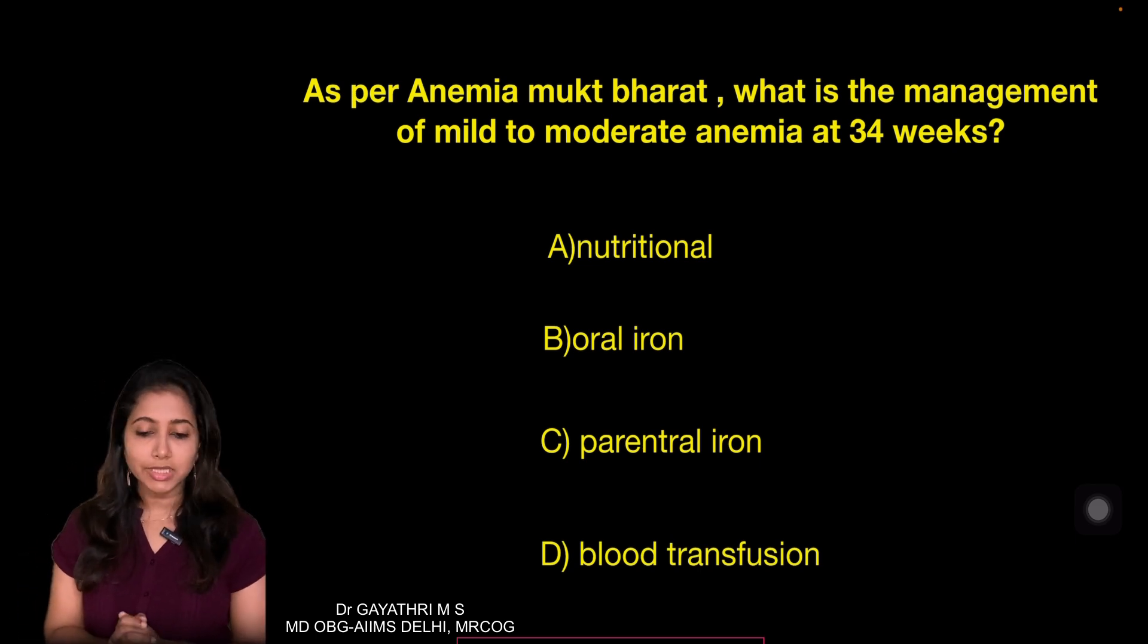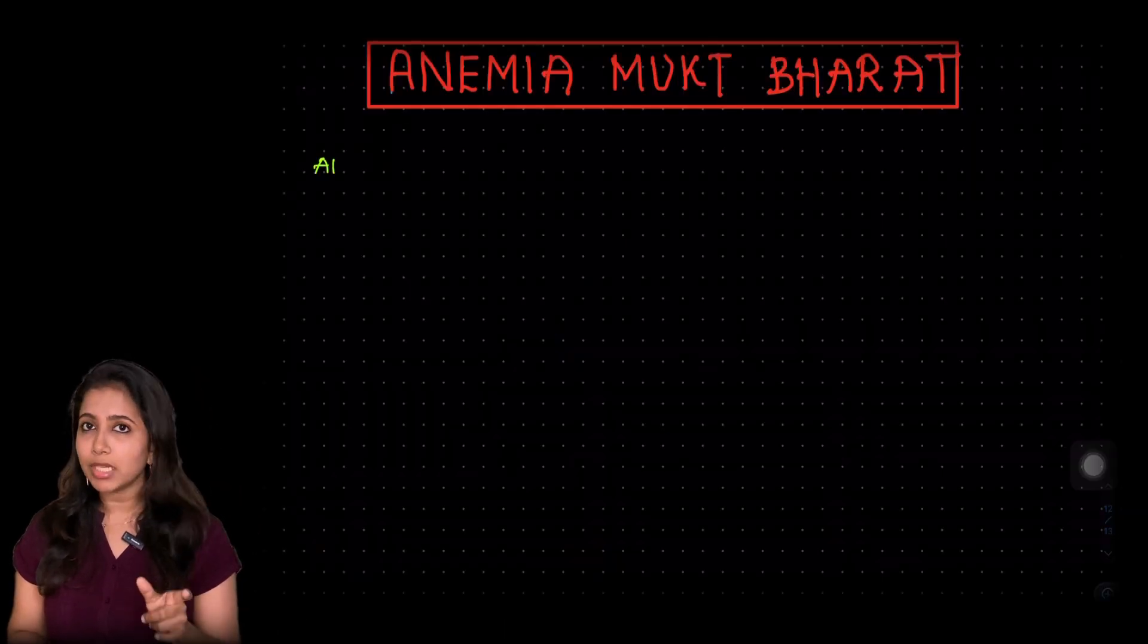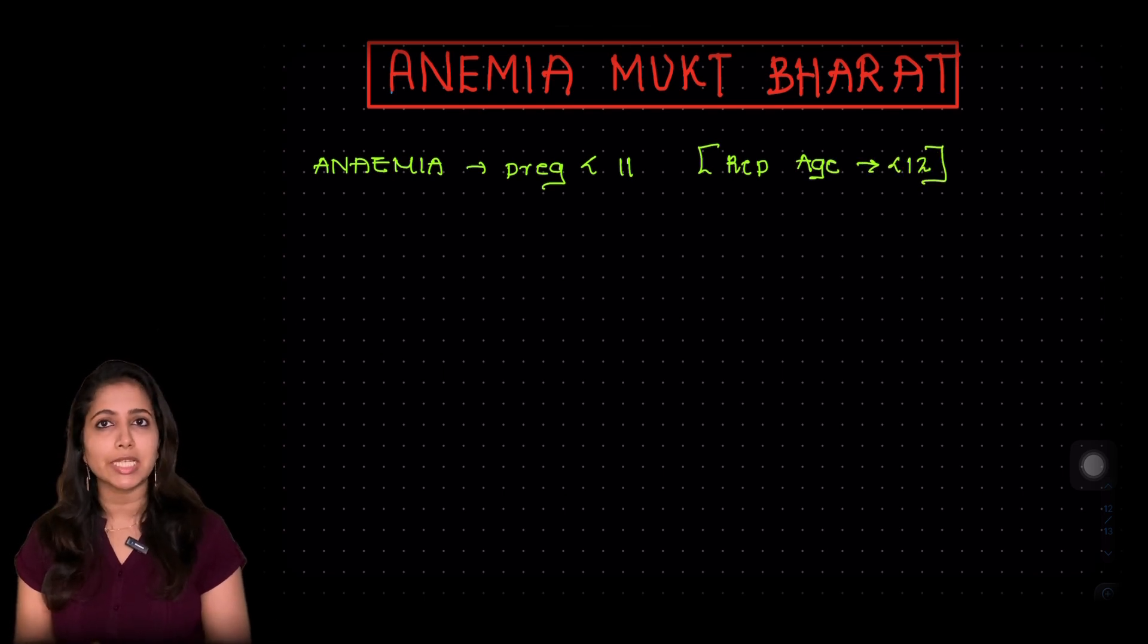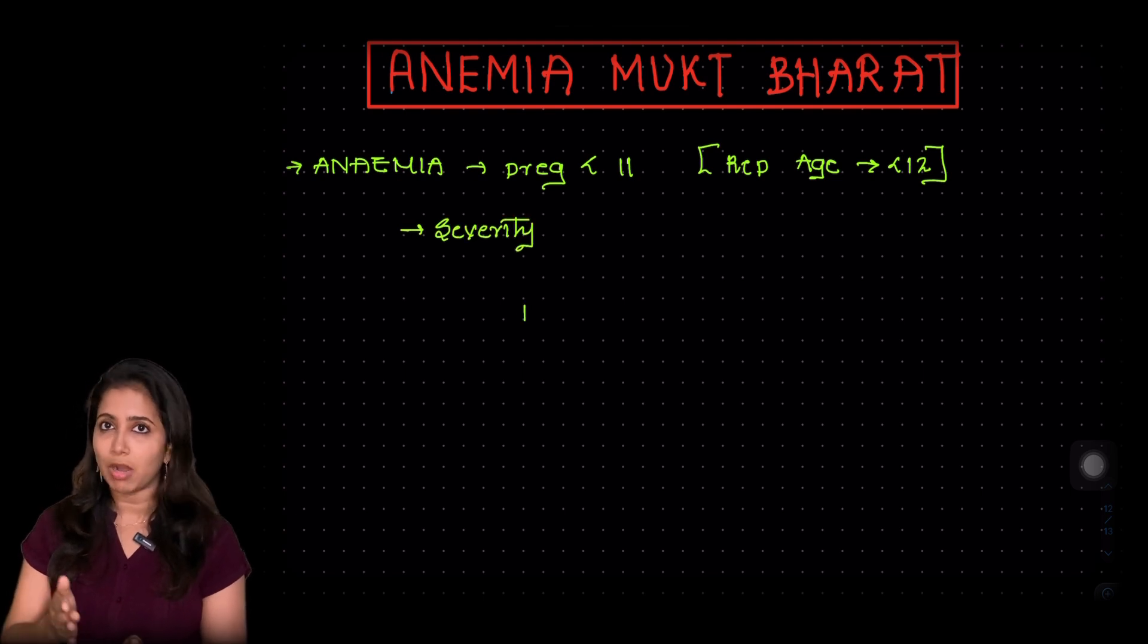To understand this, let's see what is anemia. Anemia in a pregnant woman is when the hemoglobin is less than 11, unlike the normal reproductive age group where anemia is less than 12. So we would be dividing them as per the severity as mild, moderate and severe anemia.